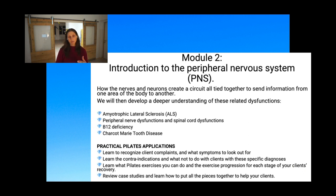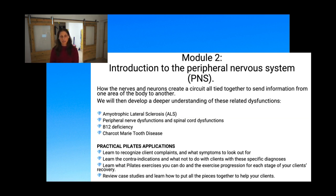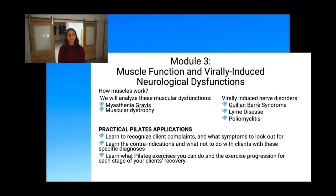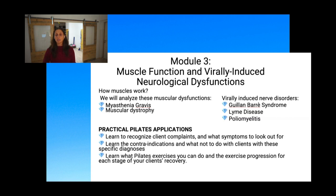For module two, we'll be talking about the peripheral nervous system, amyotrophic lateral sclerosis (ALS), peripheral nerve dysfunctions, B12 deficiency, and Charcot-Marie-Tooth disease. The third module will focus on muscles — how do muscles work — and virally induced nerve disorders like Guillain-Barré, Lyme disease, and polio, or people who suffered from polio years ago who are now older.